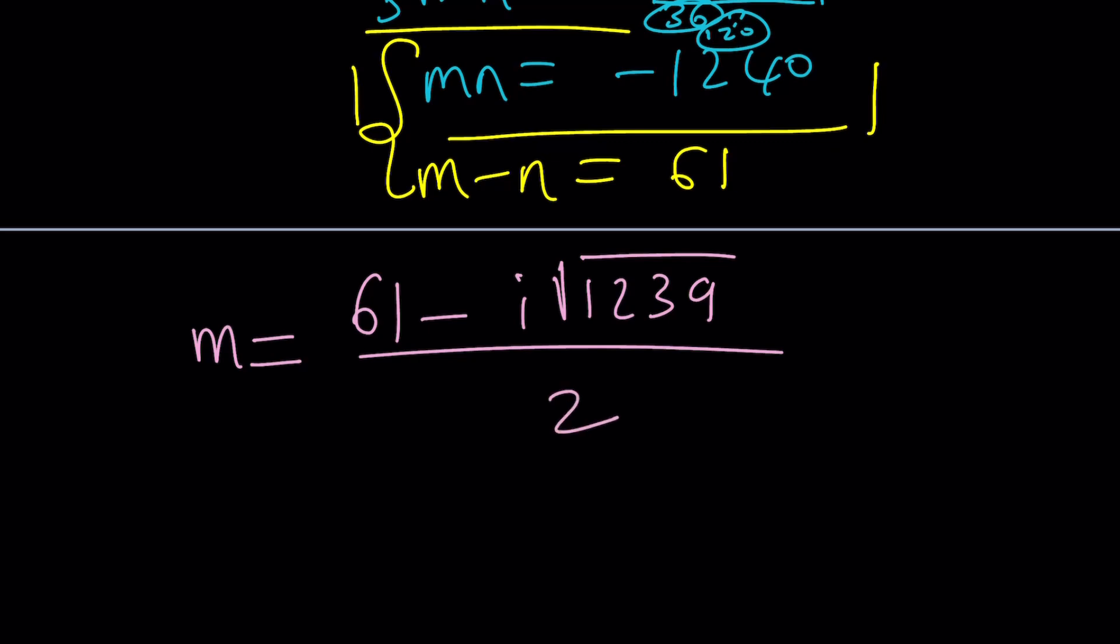And guess what happens if you try to solve this system? Let me just give you the m value. 61 minus i times the square root of 1,239 all over 2. Solutions are complex. They're not even real numbers. So they're not integers. They're not even the Gaussian integers. No integers, no reals. Too bad.